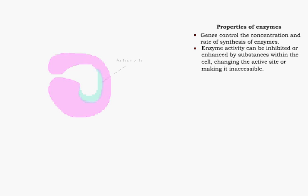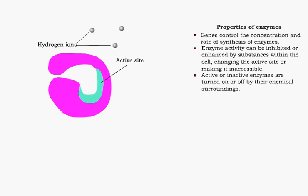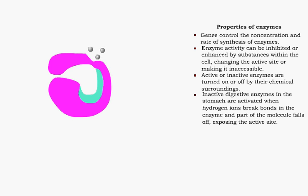Many enzymes exist in inactive forms and are turned on by their chemical surroundings. For example, digestive enzymes in the stomach are inactive until they contact the hydrogen ions there. The ions break some of the bonds in the enzyme and part of it falls off, exposing the active site.